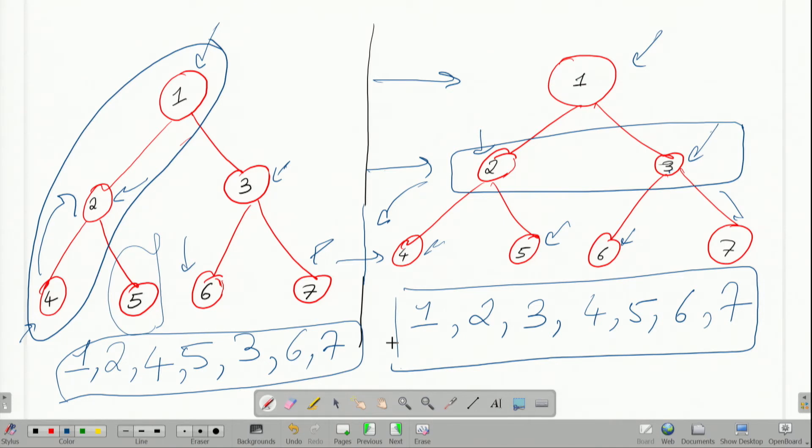So as you can see, there were seven vertices in the graph, all seven have been traversed, the difference being the order in which they were traversed, dependent on the technique we used. In depth first search, it was a depth that we explored first. Whereas in the breadth first search, it was a breadth we explored first.